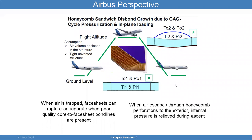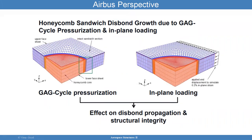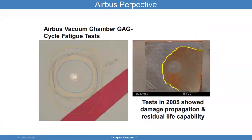We want to do testing to verify that if you have a disbond — say in the rudder location — the structure can take the cyclic loading very well. You could also have in-plane loading that can make things worse. You can see the disbond popping out, and we want to make sure the structure can sustain this cyclic loading. The Airbus vacuum chamber test tries to simulate ground-to-air-to-ground cycles. Testing from 2005 shows damage propagation due to this issue.